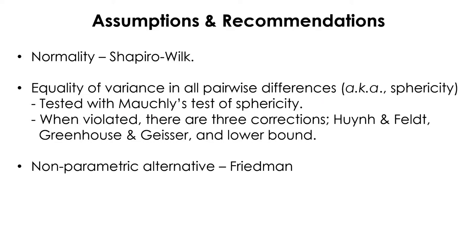Sphericity is tested with Mauchly's W test. If the p-value from Mauchly's test is less than 0.05, then you have a problem with sphericity. In that case, there are three corrections available in Jamovi and SPSS: Huynh-Feldt, Greenhouse-Geisser, and Lower Bound. Lower Bound is the most conservative correction. The recommendation is to use the Greenhouse-Geisser correction to report the within-subject effect.